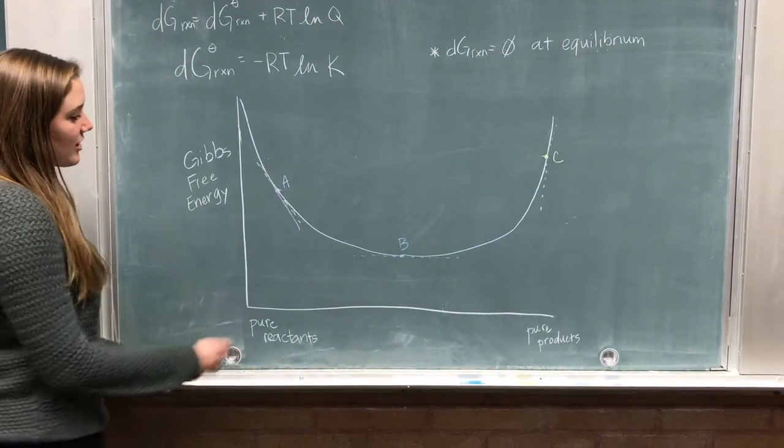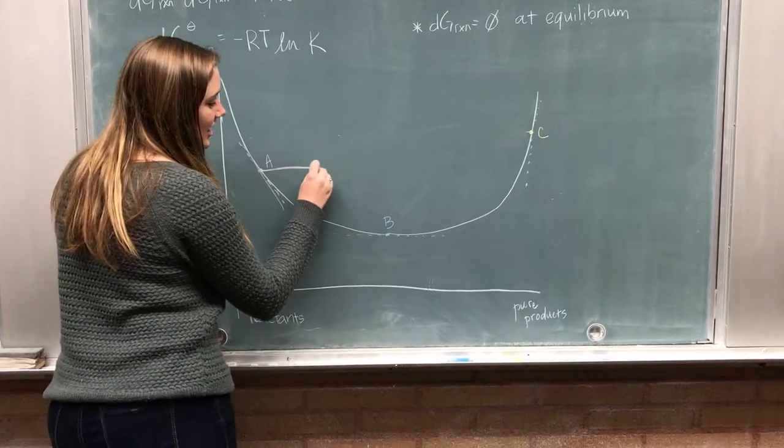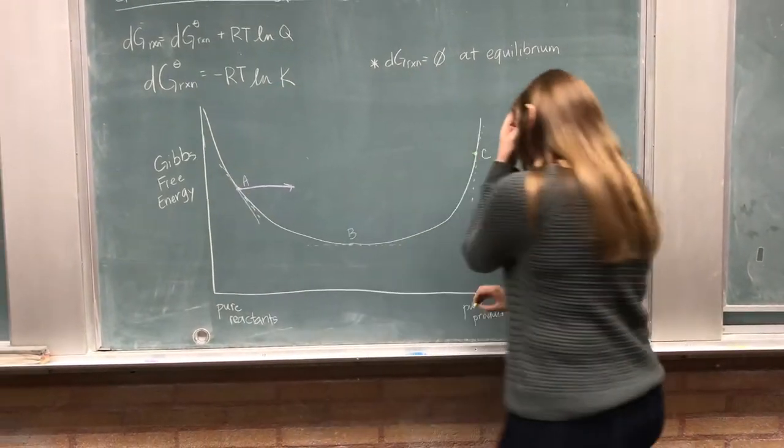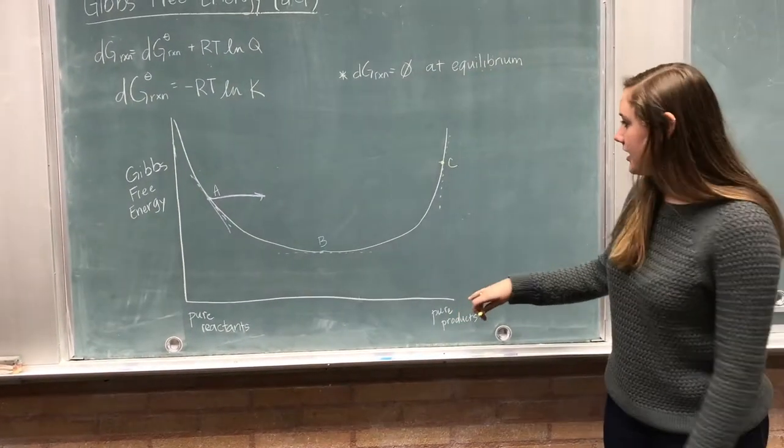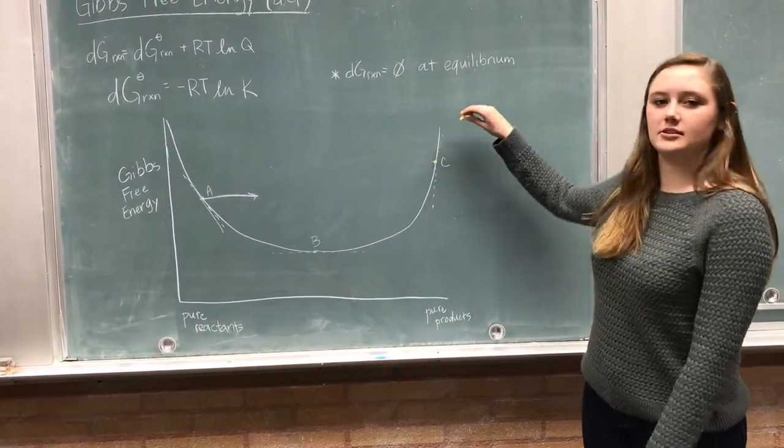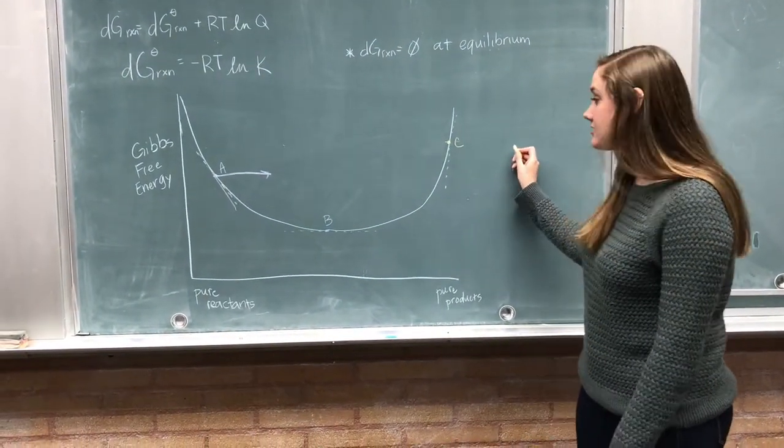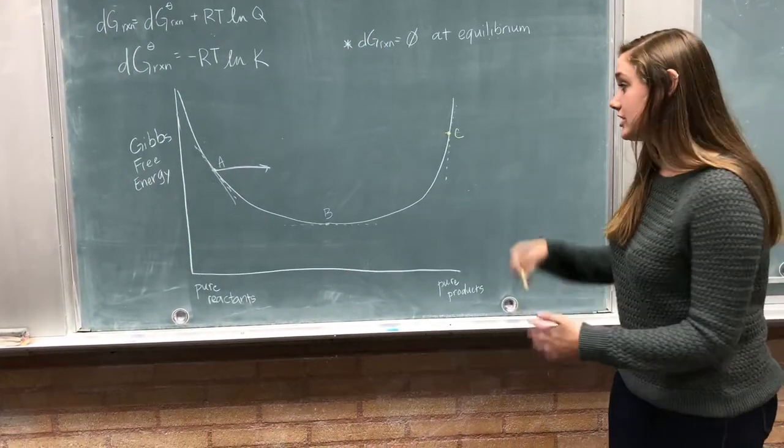The reaction is spontaneous. Perfect! Yes, it's spontaneous. So our reaction is going to be spontaneous in the forward direction. Alright, so here at C, however, we have mostly products, right? But our delta G is now positive. So what does that mean? Non-spontaneous? Perfect! Yes, the forward reaction is non-spontaneous. Which means our reverse reaction is spontaneous.